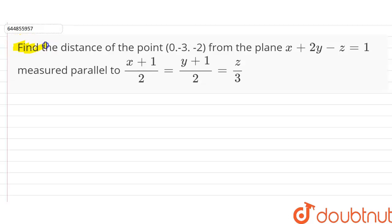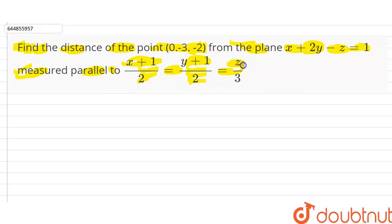The question says: find the distance of the point (0, -3, -2) from the plane x + 2y - z = 1, measured parallel to the line (x+1)/2 = (y+1)/2 = z/3. So we have to find the distance of the point (0, -3, -2) from a point that lies on the plane, measured parallel to this line.